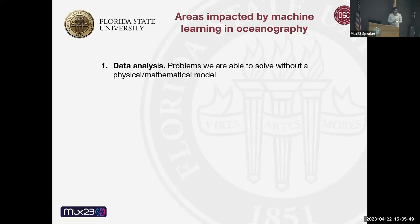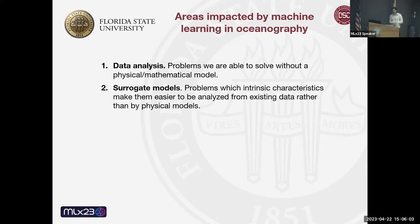The first group is data analysis — everything that we can train a human to do with data, but we don't have a physical model for. The second one I call surrogate models: problems we can solve with physical models, but that have characteristics making them suitable for machine learning, either because we have a lot of data or because it's too complex to solve with a classic physical model.